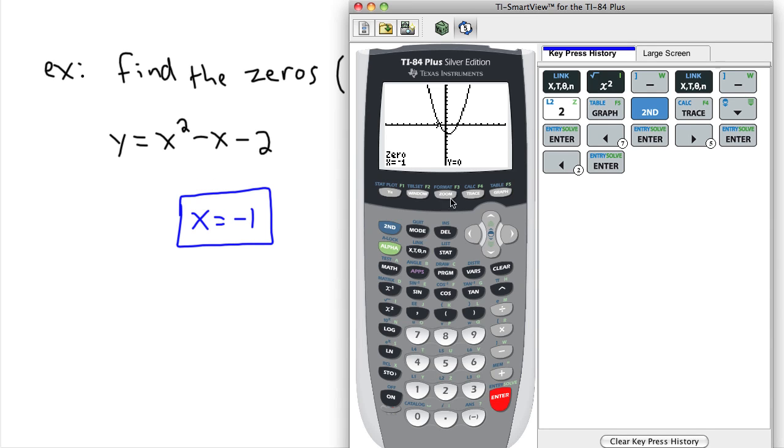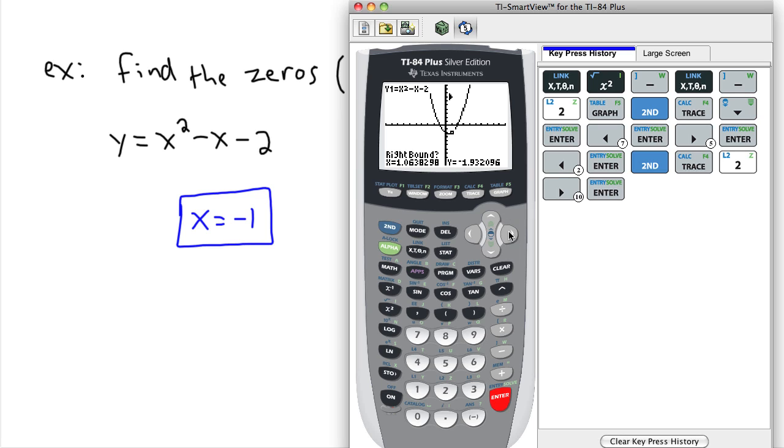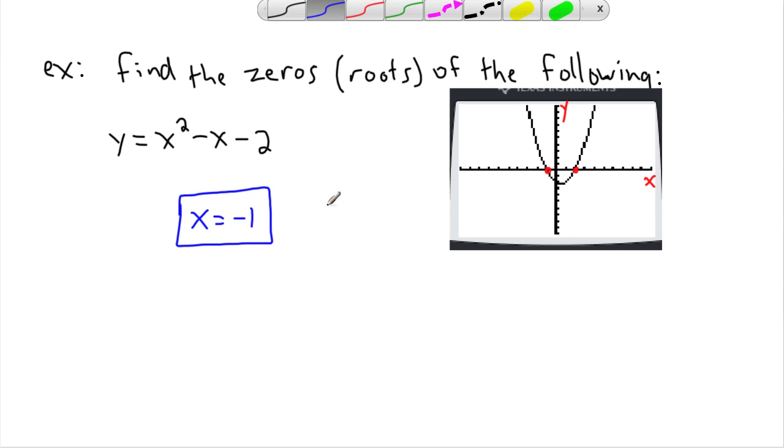And if I want to check for the other one, I do the same thing. So I go back to calc, I press 2 for the zeros. And I want the left bound, I'll do it from here. That's the left of the point that I want. Here's the point that I want right around here. So I'll go a little bit to the right for the right bound. And then back to the middle. I'm going to press enter. And that means x = 2. So it was indeed what we were hoping, that these two values right here were fairly easy to find with a calculator.